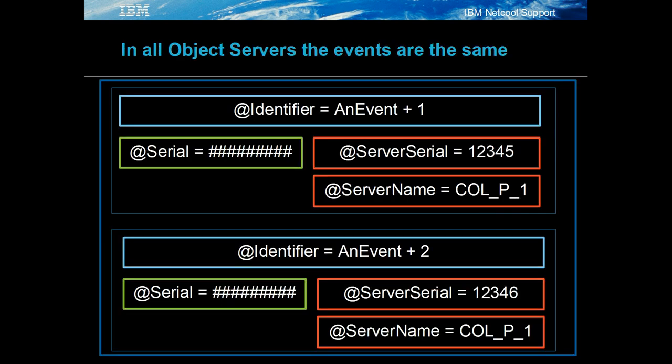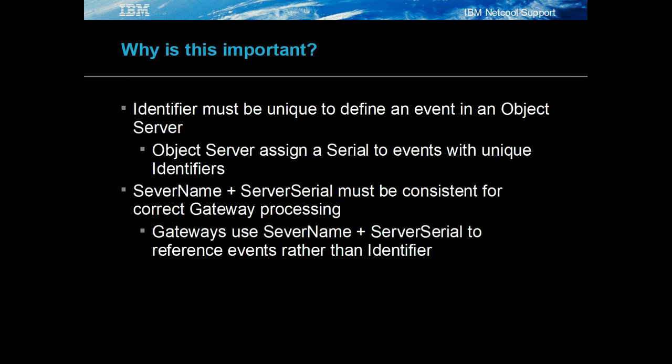From this example, we saw that the events were defined by their identifier, and within the multi-tier system by the server name and server serial. Provided the event persisted in the collection layer, the server serial would remain the same for each re-insert. The collection expire time defines when events are deleted in the collection layer. By default, the col_new_row trigger sets collection expire time to 30 seconds if it is not set already. The identifier defines the event in the object server; server name and server serial define the event in the multi-tier system, because the gateways use server name and server serial to identify events in the object server.